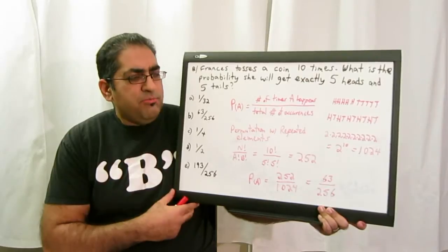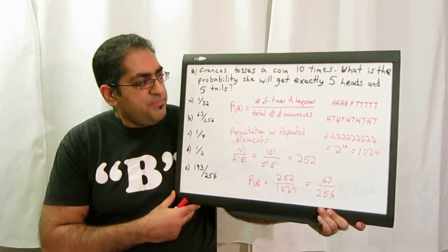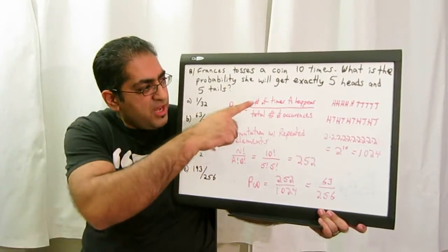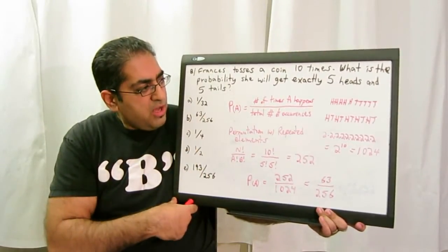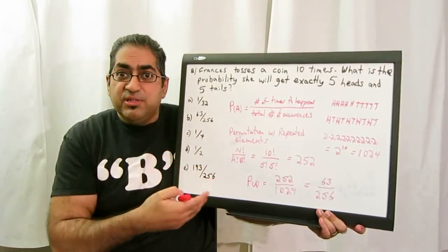Now some people might say, well probability is not that hard, but actually when you really think about it, it's very complicated. The standard probability is P(A) equals the number of times A happens over the total number of occurrences. And we use that basic knowledge to help us figure this out.